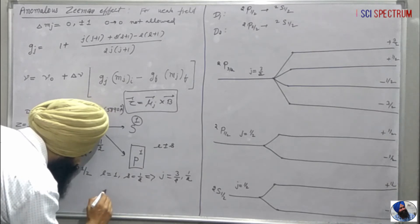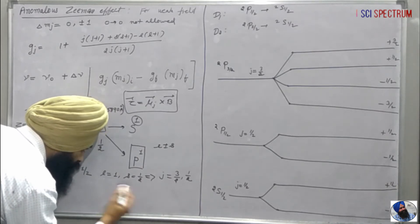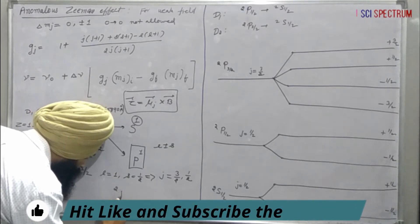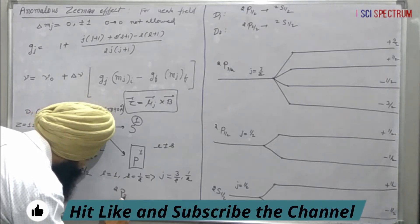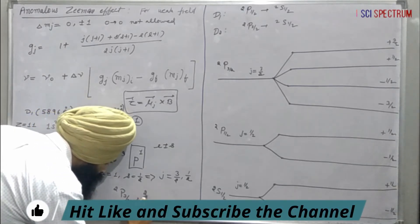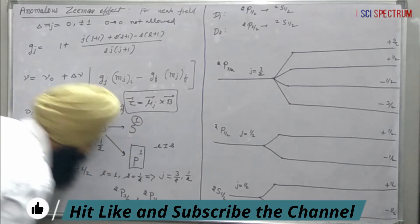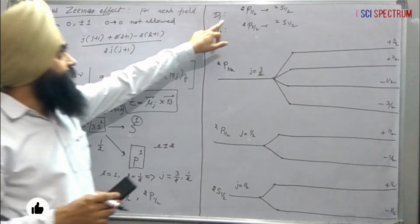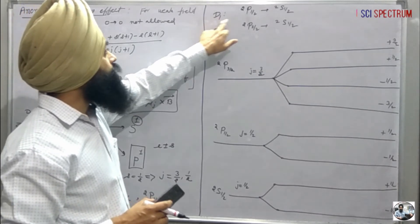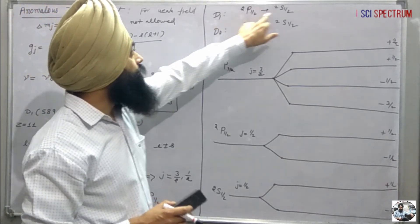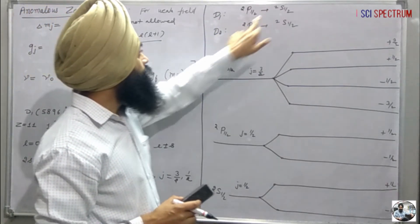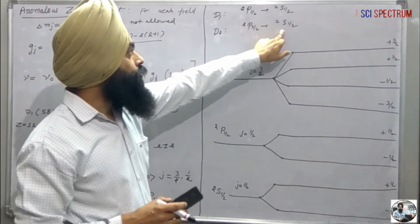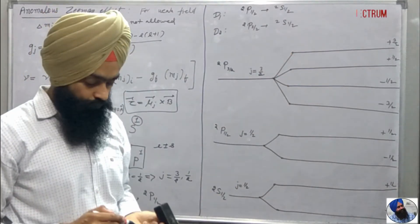Using these values we can find out the term values, which are 2p(3/2) and 2p(1/2). As already written, the D1 and D2 lines arise from transitions: D1 from 2p½ to 2s½, and D2 from 2p(3/2) to 2s½.